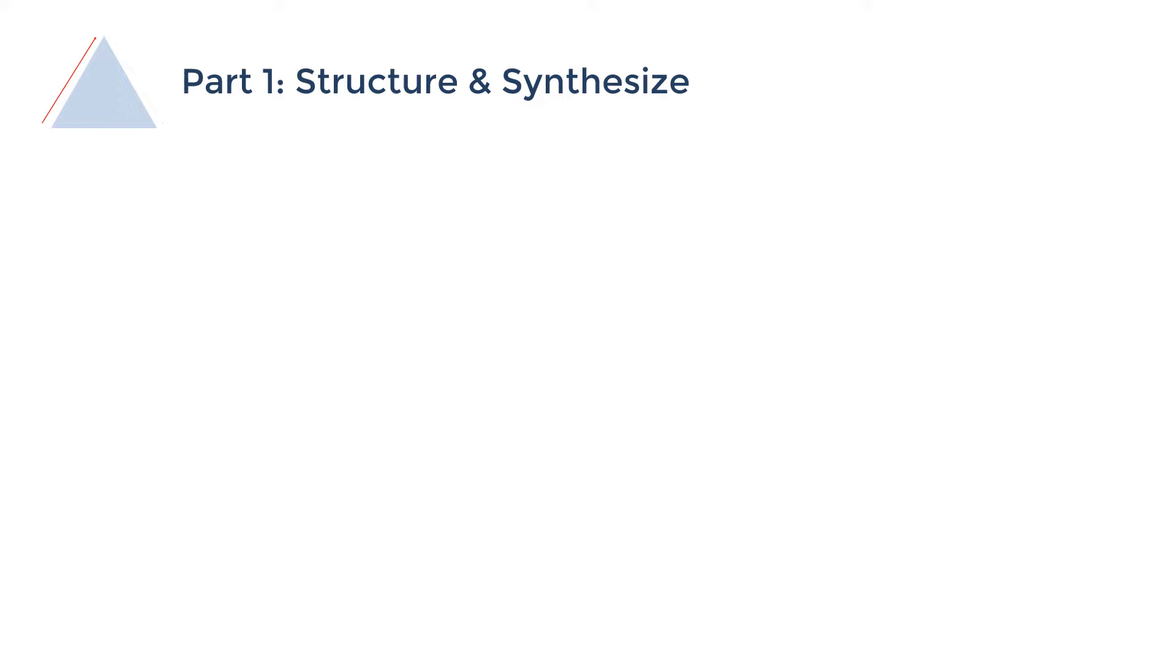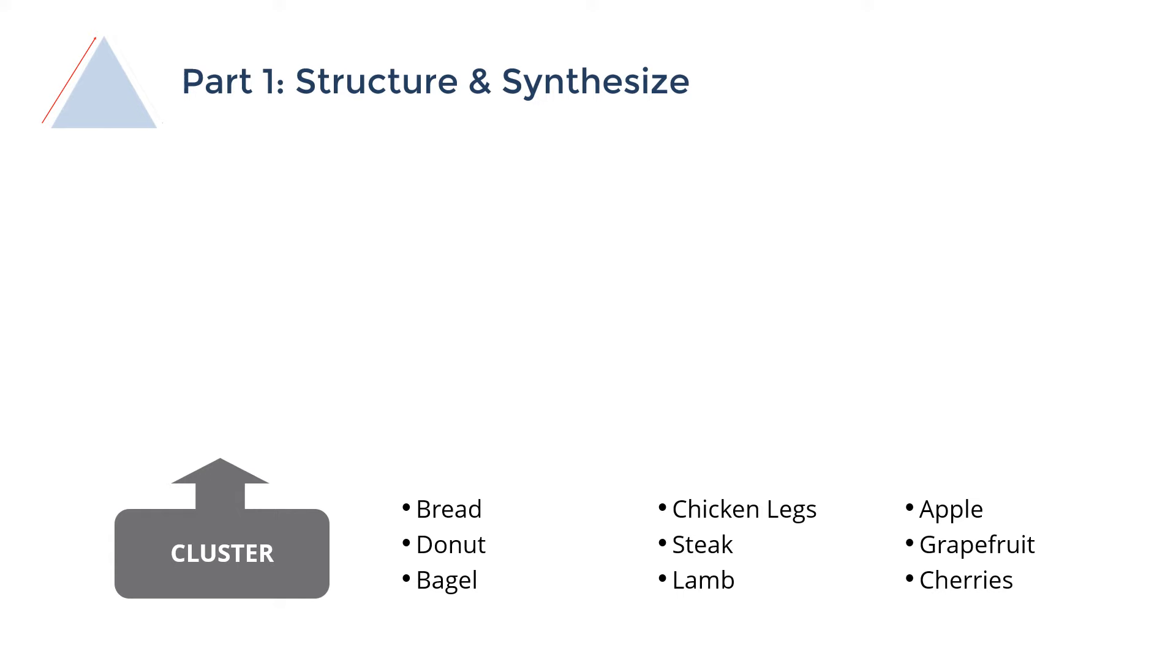So the first step is really you want to start grouping or clustering the different like things. So as you can see, apple, grapefruit, cherries are very similar. Over here, we also have chicken legs, steak, lamb. We also have bread, donut, and bagel.